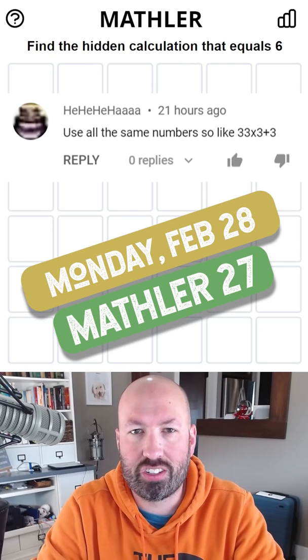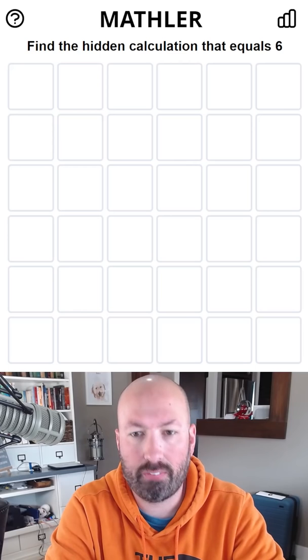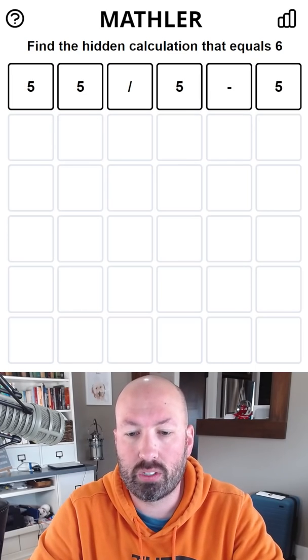All right, so someone suggested that I should start with just one number, so I think I can do that today if I do 55 divided by 5 minus 5, which gets a 6.